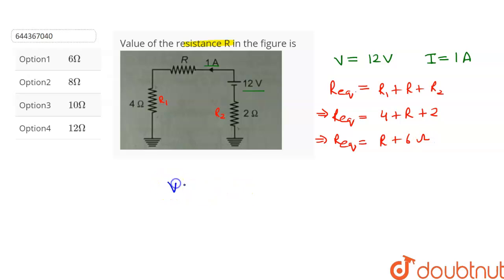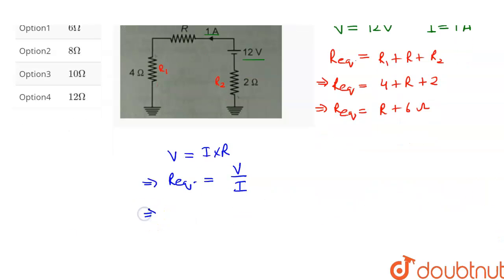From Ohm's law, we know that V is equal to IR. So we can write Req is equal to V upon I. Let's substitute the value of V and I in this equation. This will give us Req is equal to R plus 6. R plus 6 is equal to V is 12 upon I is 1.